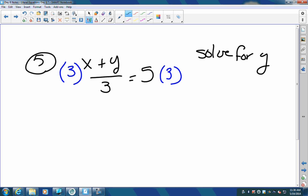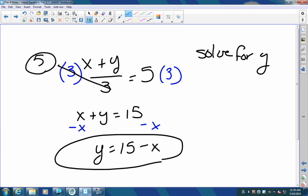By doing this, it cancels those out. You get X plus Y equals five times three, which is 15. Now to get Y by itself, subtract your X. You get Y equals 15 minus X. That's your answer. And you can write it as 15 minus X. It doesn't matter which side the Y is on. Means the same thing.